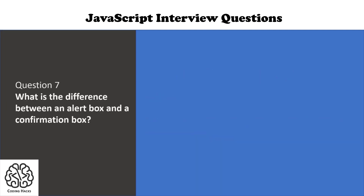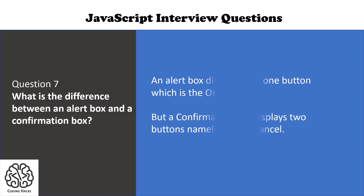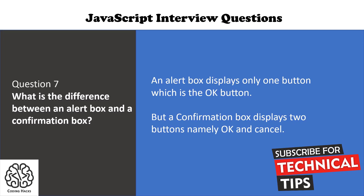Question number seven is: what is the difference between an alert box and a confirmation box? An alert box displays only one button, which is the OK button. But a confirmation box displays two buttons — OK as well as Cancel.